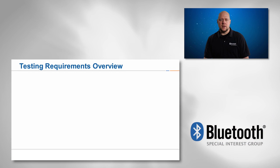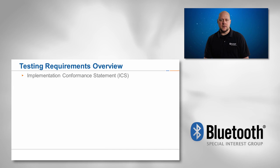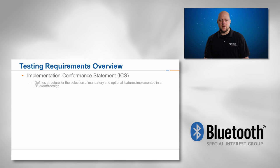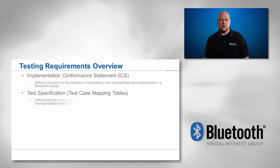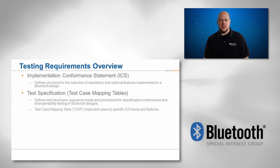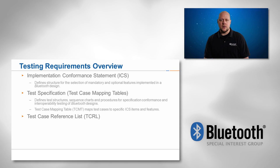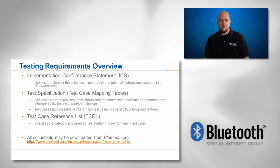The Bluetooth test requirements are made up of three main documents. The implementation conformance statement, or ICS, is essentially the list of mandatory and optional features that you will choose from before generating your test plan. The test specification defines the test procedures and also contains a test case mapping table used to identify which test cases are required for which ICS features. The last document is the test case reference list, or TCRL, which lists all of the available test cases that may appear in your test plan. You can download all of these documents from the test requirements section of Bluetooth.org.